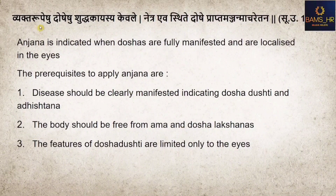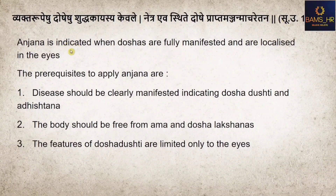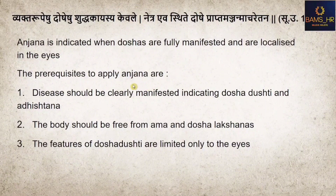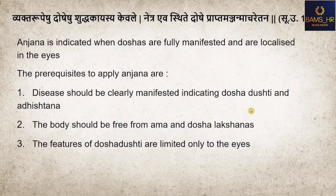From Shushita Uttaratantra: Anjana is indicated when doshas are fully manifested and are localized in the eyes. The prerequisites to apply Anjana — the conditions under which Anjana should be applied — are that diseases should be clearly manifested, indicating dosha shandushta adhistana, meaning the location is known and the doshas are vitiated.